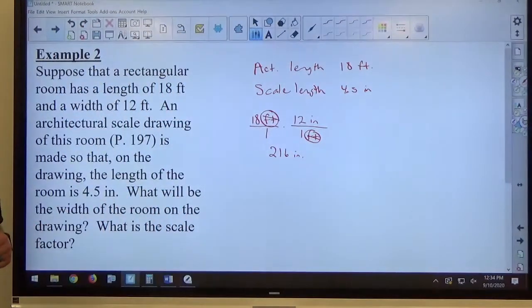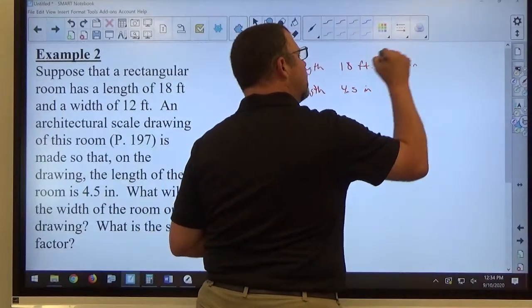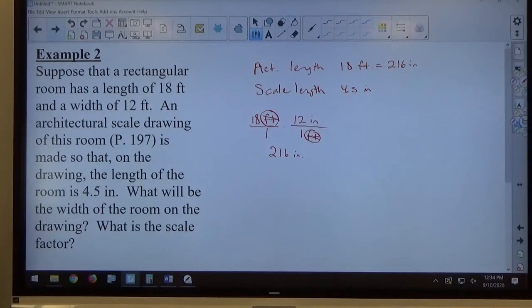18 times 12 is 216. So, feel free to use the calculator to calculate when you need to. So, the actual length is 216 inches, and the scale length is 4.5 inches. So, my first task here is to find the scale factor.